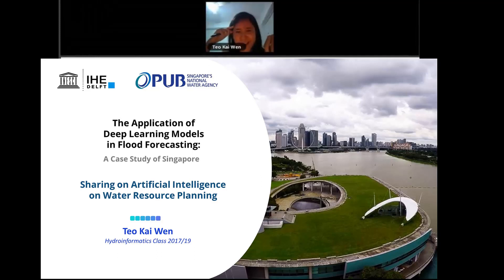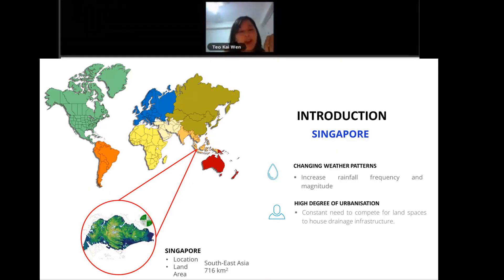What we actually did is we apply deep learning models in flood forecasting for a case study of Singapore. The deep learning models here actually adopt something like image recognition and pattern recognition, which is quite interesting because it's not very common for flood forecasting models.